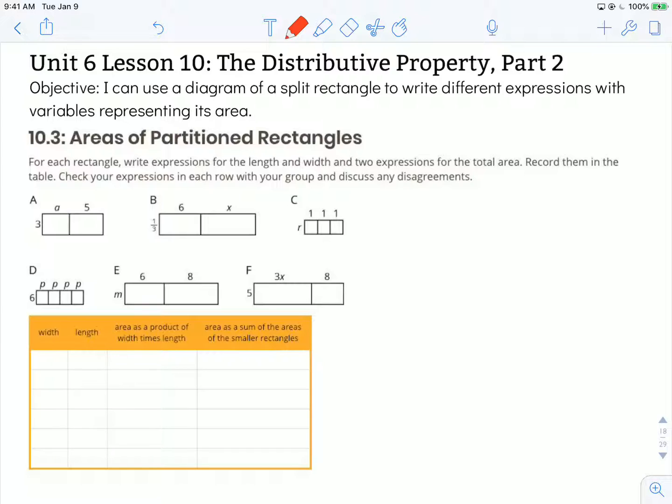Let's look at Rectangle A. For Rectangle A, we have a width of 3 and a length of A and 5, so we're going to write that as A plus 5. We could write that as length times width, so our length is 3 times our width. We need to use parentheses because that whole thing represents our width or our length.